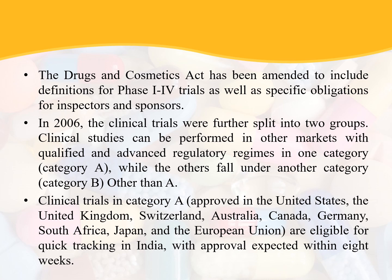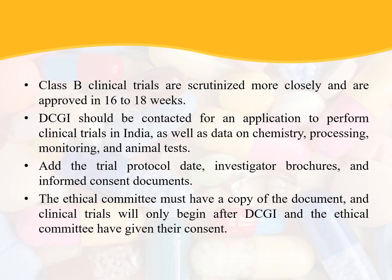Category A clinical trials are those approved in the United States, United Kingdom, Switzerland, Australia, Canada, Germany, South Africa, Japan and the European Union. These are eligible for fast-tracking in India with approval expected within eight weeks. Category B clinical trials are scrutinized more closely and are approved in 16 to 18 weeks.